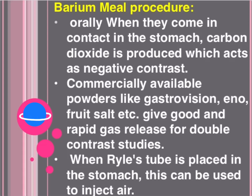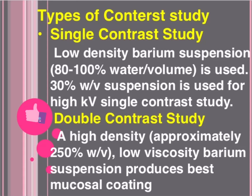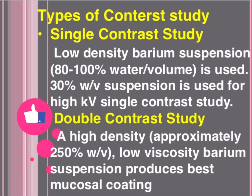For the barium meal procedure, when contrast comes in contact with the stomach, carbon dioxide is produced which acts as a negative contrast. Commercially available powders like Gastrovision and Eno fruit salt give good and rapid gas release for double contrast studies. When a Ryle's tube is placed in the stomach, air can be injected. A high density — approximately 250% w/v — low viscosity barium suspension produces the best mucosal coating.